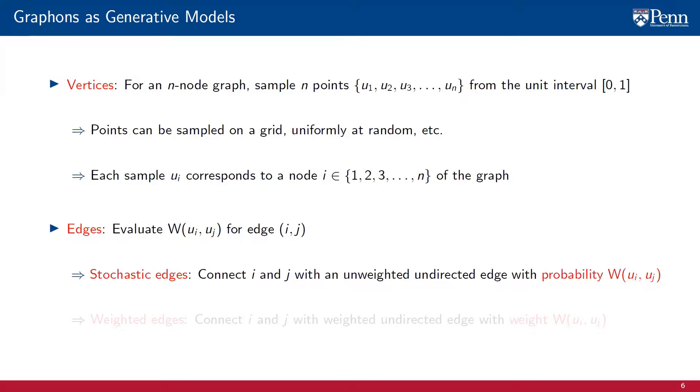In the stochastic model, we create an edge connecting i and j with probability w(u_i, u_j). If we add this edge, the edge is unweighted and undirected.